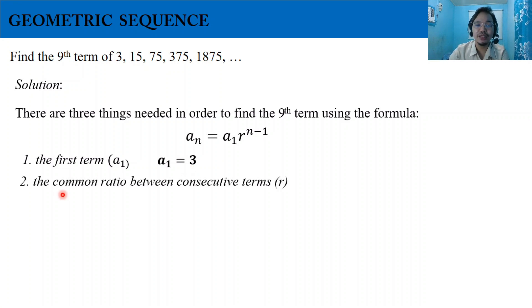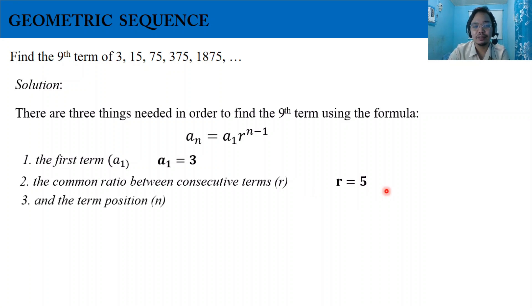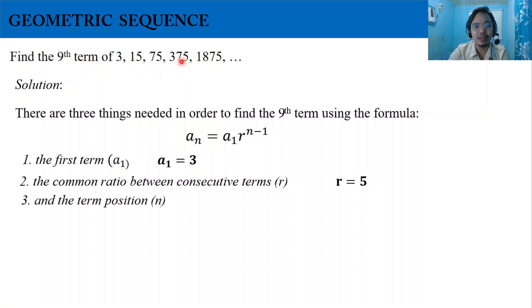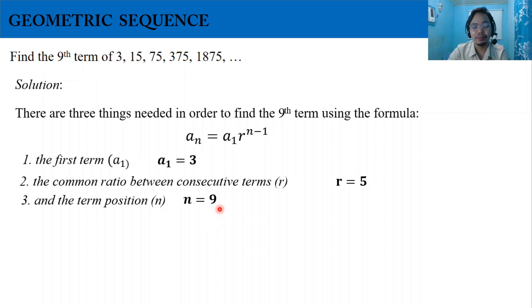Next, we find the common ratio. Dividing 15 by 3 gives 5; 75 divided by 15 is also 5; and 375 divided by 75 is also 5. So the common ratio r equals 5. We also identify the term position: n equals 9, because we are finding the ninth term.